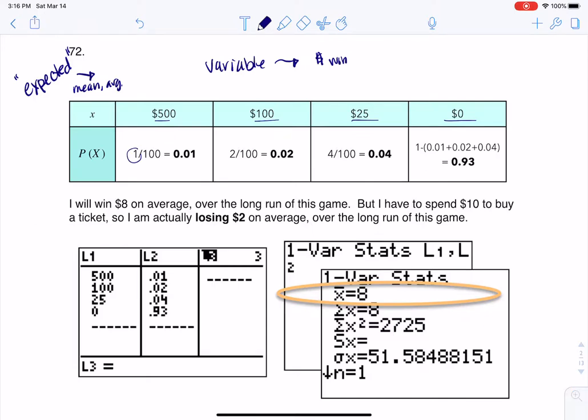But it told me there was one prize of $500, there were two prizes of $100, and four prizes of $25. And if we look at these numbers, right, we had one plus two plus four. So if you think of that, that is seven tickets that are going to pay you out.